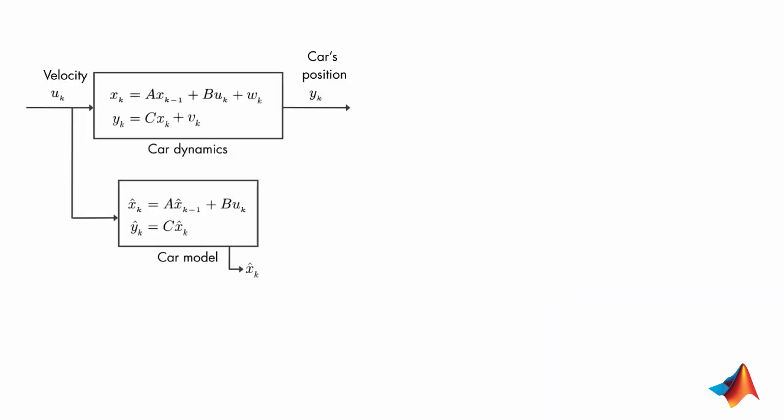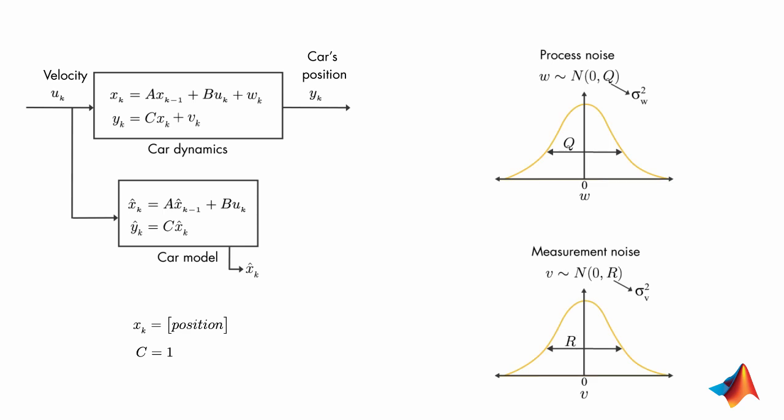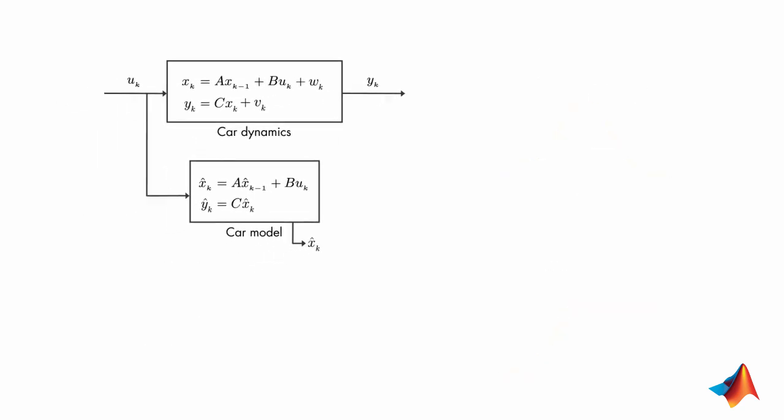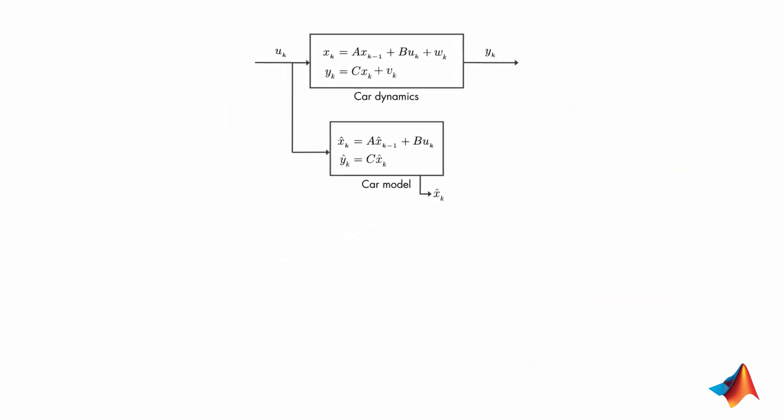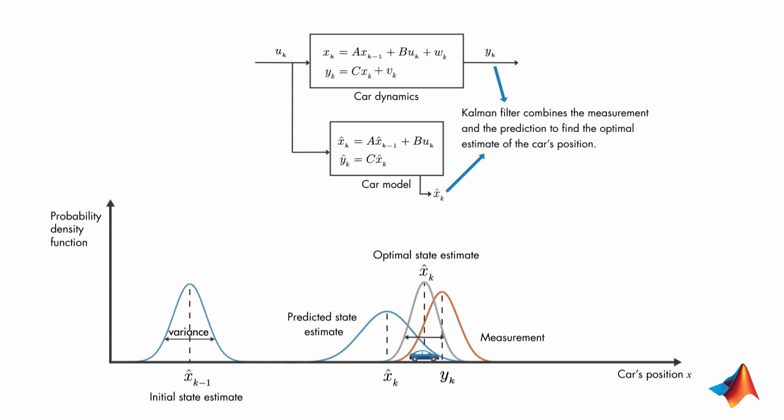In that example, we also showed the car dynamics and the car model for our single-state system, and we discussed process and measurement noises along with their covariances. Finally, we said that you could win the competition by using a Kalman filter, which computes an optimal, unbiased estimate of the car's position with minimum variance.